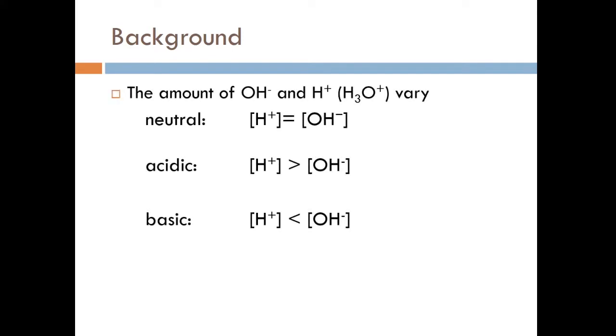The amount of H+ and OH-, which is the same as H3O+, varies. When the solution is neutral, then they're equal. H+ equals OH-. You would find that in like water, for example, pure distilled water. When the solution is acidic, you probably would have guessed this, it has more H+ than OH-. And when the solution is basic, it has less H+ compared to OH-.